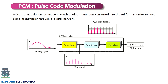Then we have PCM — pulse code modulation. PCM is a digital technique where the analog signal is converted into a digital form for signal transmission through a digital network. The analog modulating signal requires a PCM encoder. The PCM encoder consists of three components: a sampler (sampling process), a quantizer (quantizing process), and an encoder (encoding process).